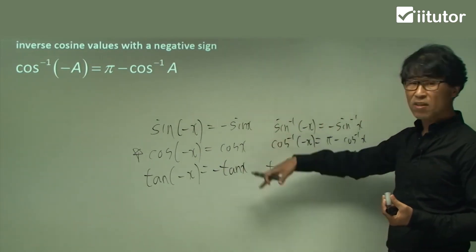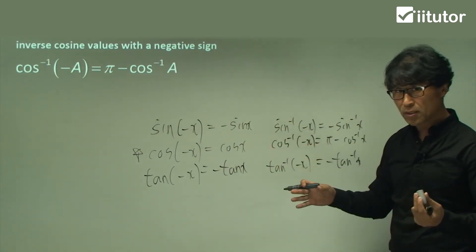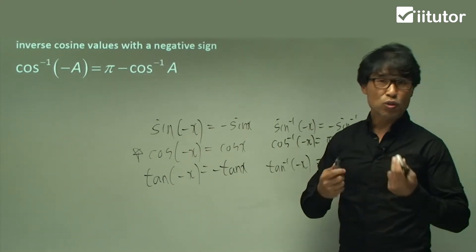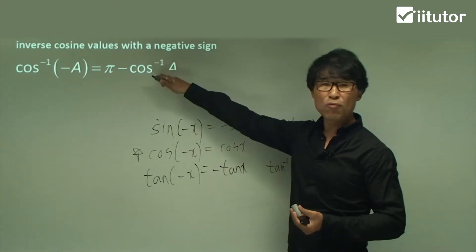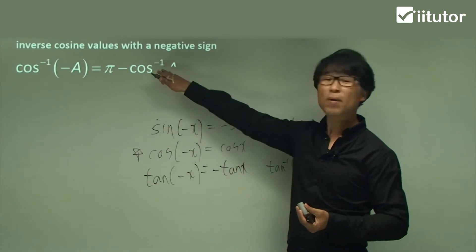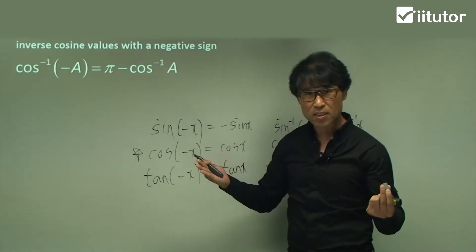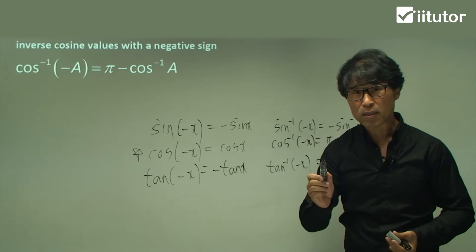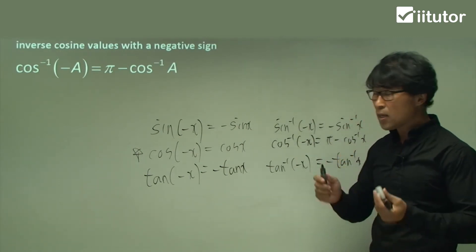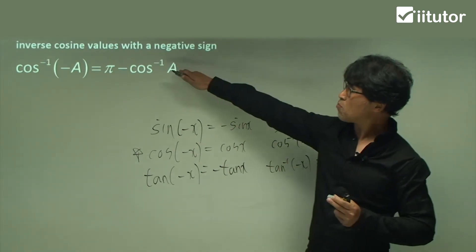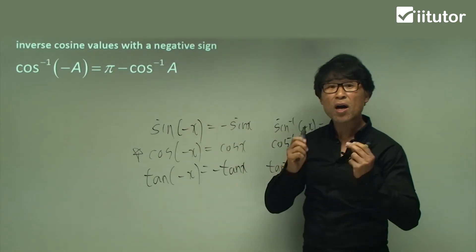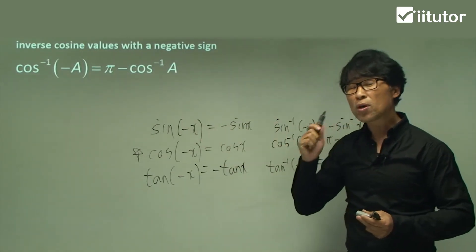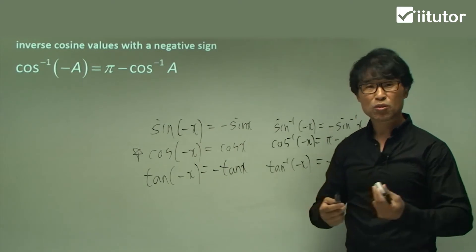Probably just one exception — among inverse sine, inverse cosine, and inverse tangent — is inverse cosine. Due to that fact, your school teachers will be fond of making questions on this topic, because it is an exception. So that is one thing you have to keep in mind. That property or formula is one of the highly likely topics for your school exam.